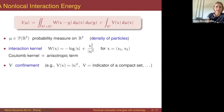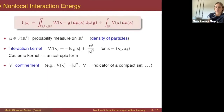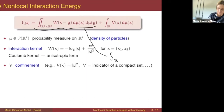Given a certain distribution of particles, the energy corresponding to this distribution is given by this expression. The first term is the non-local interaction energy, and it's a convolution-type integral — you can rewrite this energy as the integral on R² of the convolution of W with mu, then integrated with respect to mu.